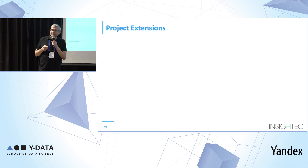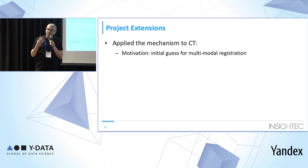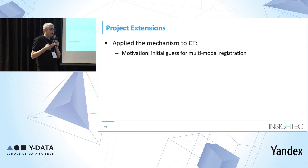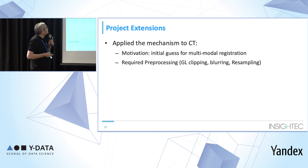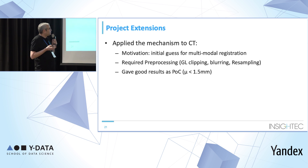I also did two extensions to this project. The first was to apply the same mechanism to the CT volume. If I have these landmarks for both CT and MR, they can be used for multimodal registration. However, CT volume quality is lower in the brain since it was aimed at finding the skull bone, so I had to do some preprocessing: gray-level clipping, 3D blurring, and finally 3D resampling to the sagittal orientation. The results were quite good as a proof of concept.